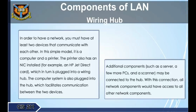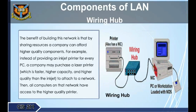Additional components such as a server, other PCs, and a scanner may be connected to the hub, giving all network components access to each other. The benefit of building this network is that by sharing resources, a company can afford higher quality components. For example, instead of providing an inkjet printer for every PC, a company may purchase a laser printer — faster, higher capacity, and higher quality — and all computers on the network have access to it.